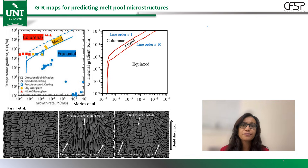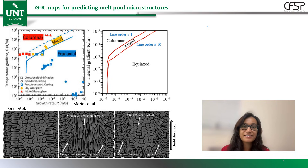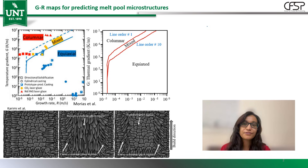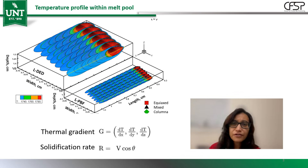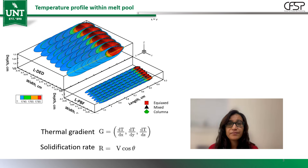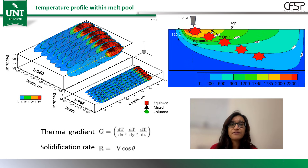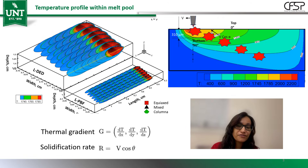Naturally I wanted to build such a map for my own alloy to predict the microstructure for my newly designed low alloy martensitic steel that we had printed using both LPBF and LDAD. For achieving this, we ran a full 3D melt pool simulation and calculated the thermal gradient and growth rate everywhere within that tiny melt pool region for both LPBF and LDAD.